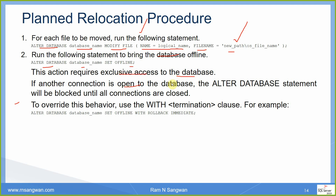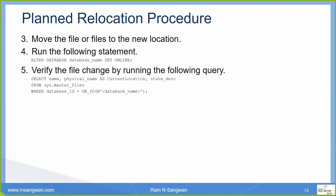If another connection is open to the database, you need to close it. To override, use: ALTER DATABASE database_name SET OFFLINE WITH ROLLBACK IMMEDIATE. Then move the file to the new location and run: ALTER DATABASE database_name SET ONLINE. We'll be doing comprehensive examples on relocation, copy, export/import, and creating copies of the database — also demonstrating directly from SQL Server Management Studio.